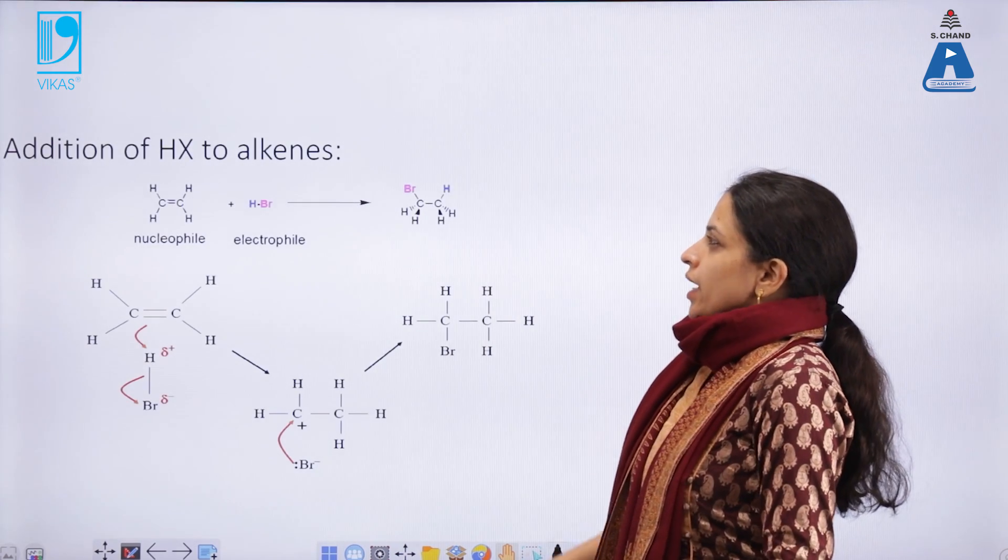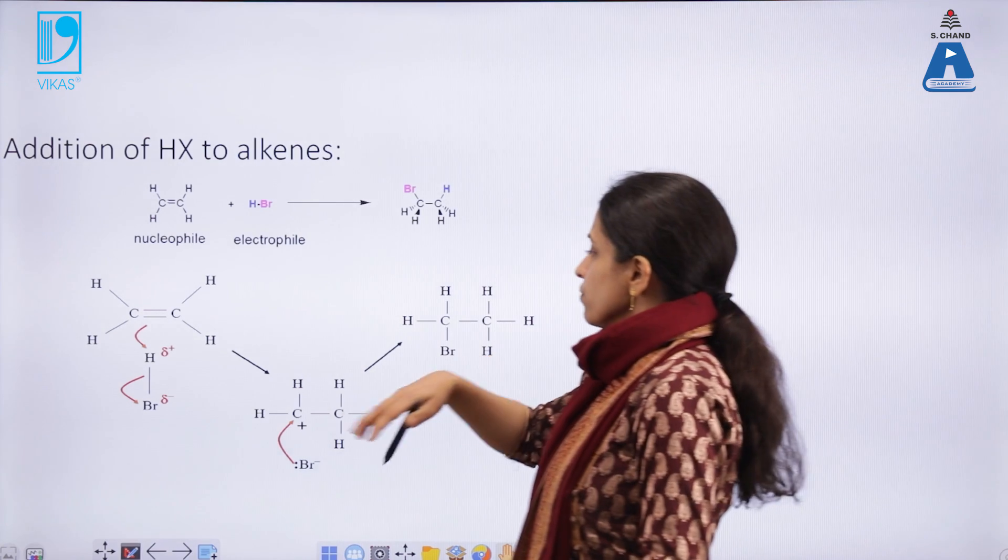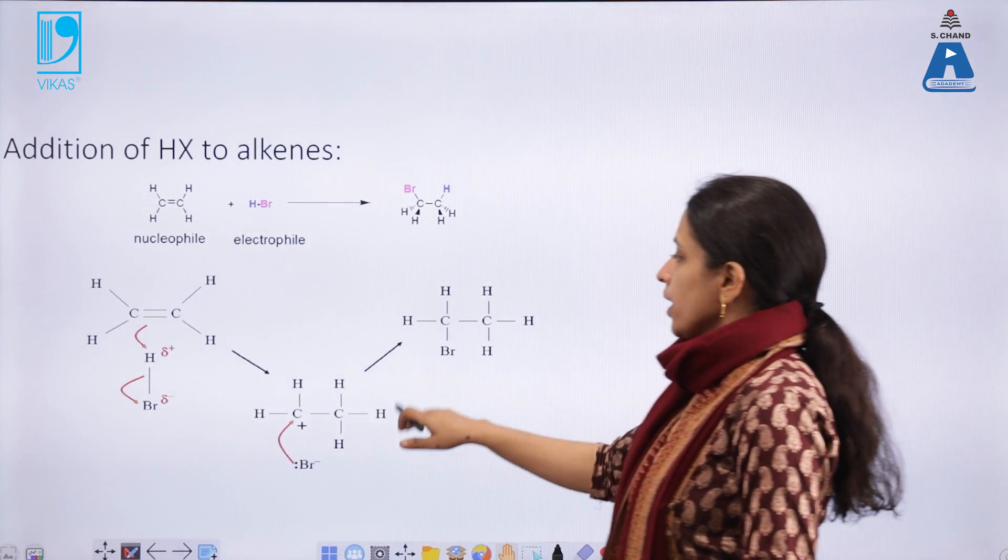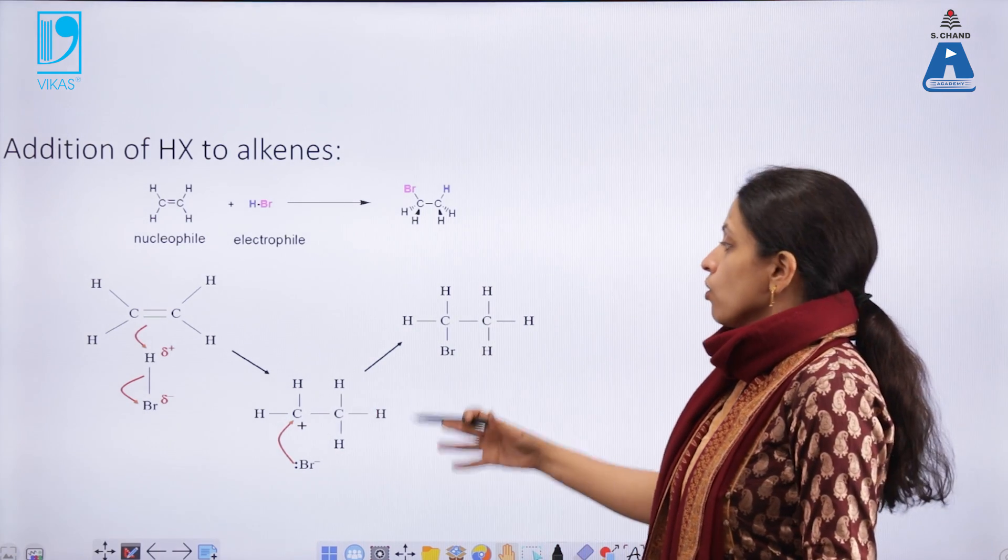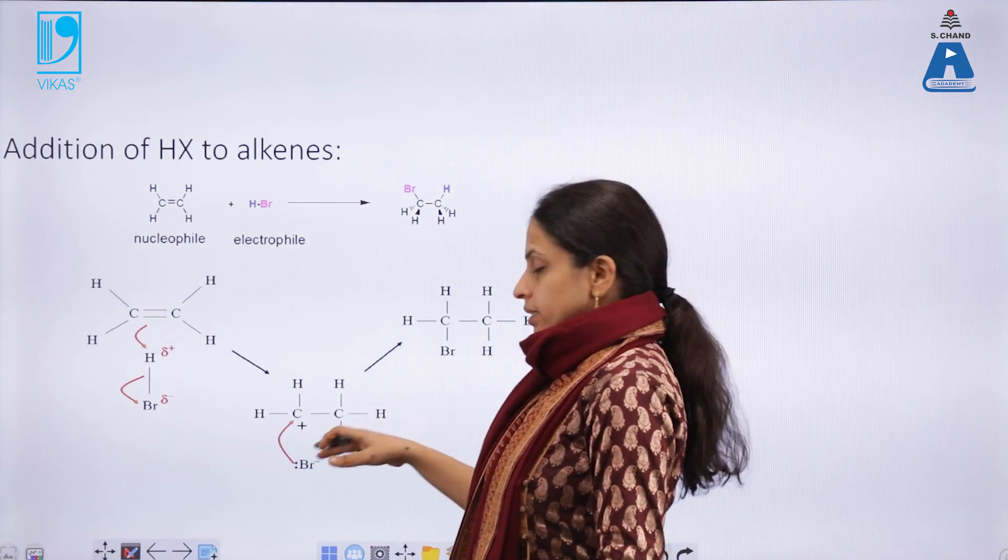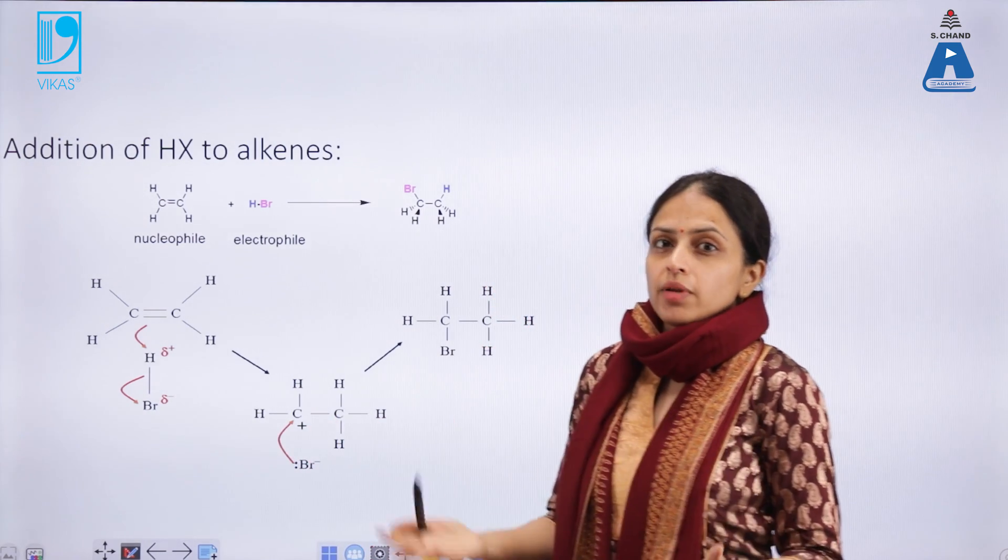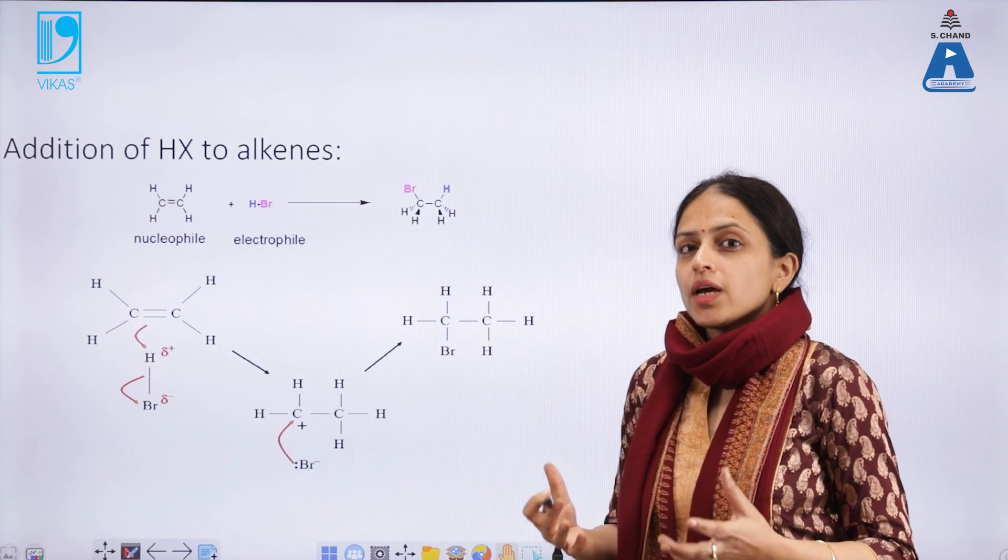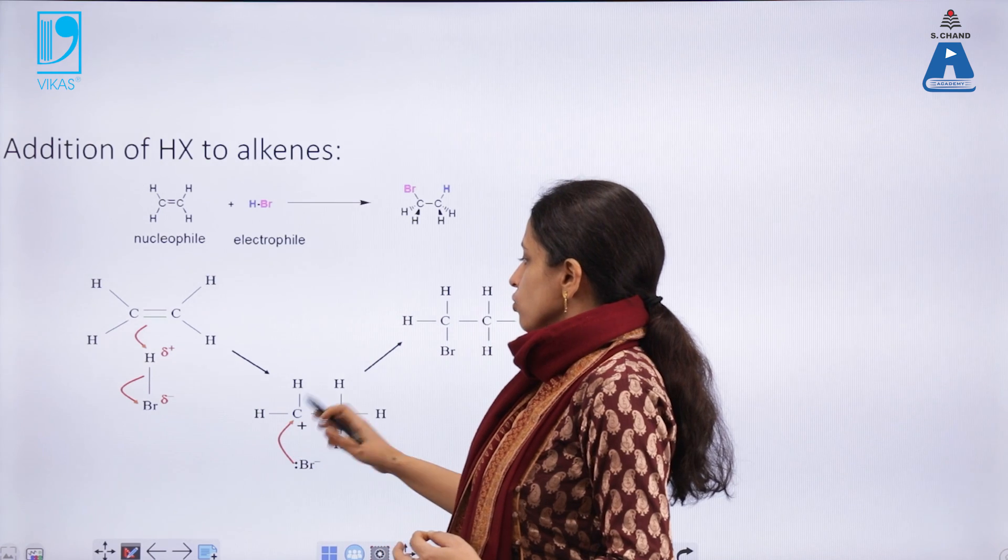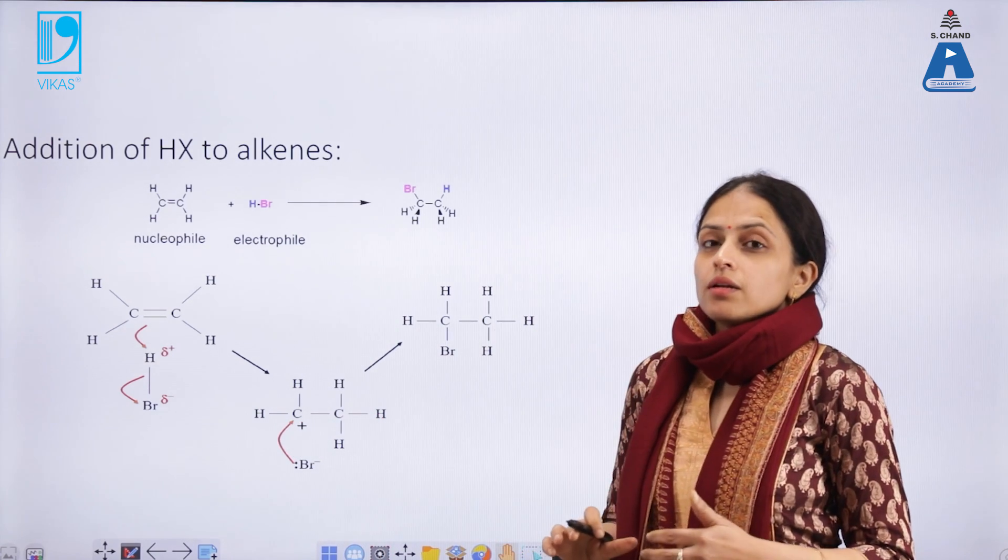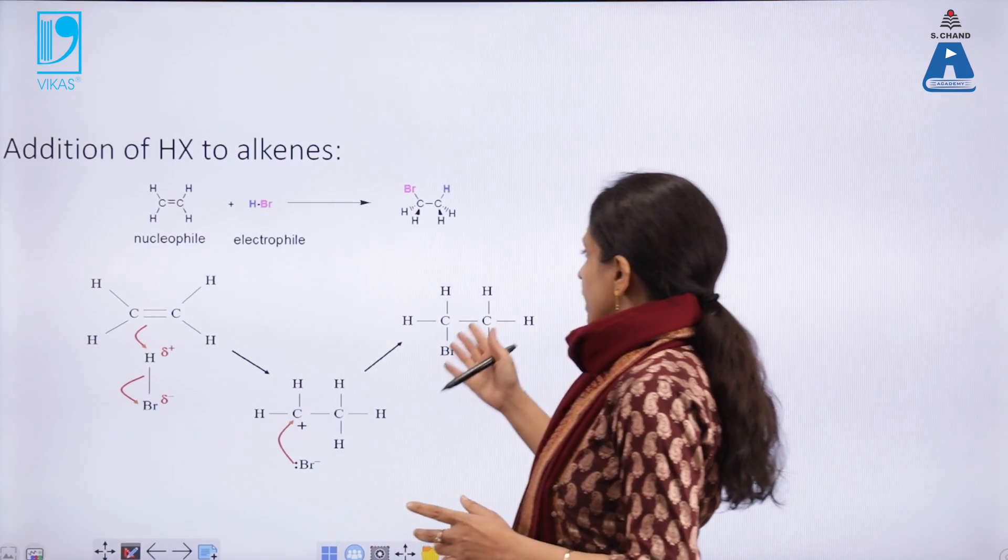See the mechanism of addition of HX to the alkenes. In the first step, there is a formation of carbocation which is happening. If Markovnikov's rule is to be followed, the carbocation is getting formed. Which carbocation will be more favored? The one which is more stabilized, and the more stabilized carbocation will be the one which is more substituted. Obviously, the nucleophile will go to the carbon atom which is less substituted or which has more number of alkyl groups. Hence, we get the Markovnikov's product in nucleophilic addition reactions.